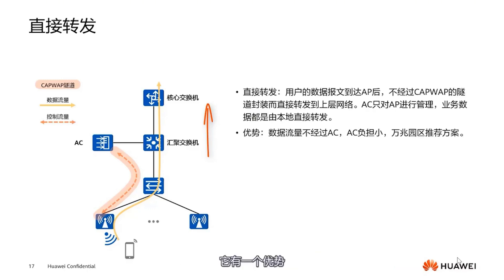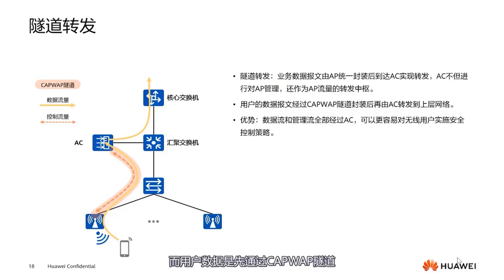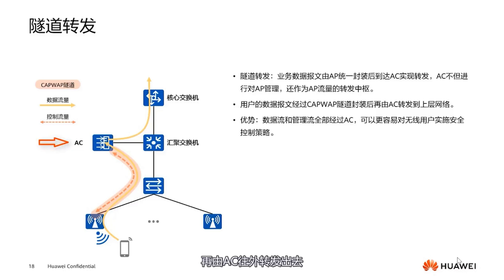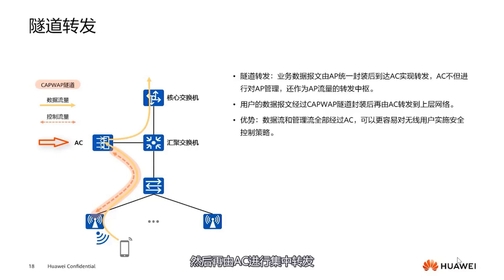Direct forwarding has an advantage: the data traffic does not go through the AC, so the AC has no burden. In tunnel forwarding, control data is the same — it goes through the CAPWAP tunnel. But user data first travels through the CAPWAP tunnel to the AC, and then the AC forwards it outward. Business data travels encapsulated through the CAPWAP tunnel to the AC, and then the AC centrally forwards it. So sometimes we call it centralized forwarding.